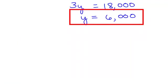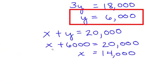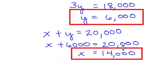Okay, so I have 6,000. I'm going to go back to my first equation, x plus y equals 20,000. I know y is 6,000, I will plug that in. Solve for x, I will subtract 6,000 from both sides and x will equal 14,000.